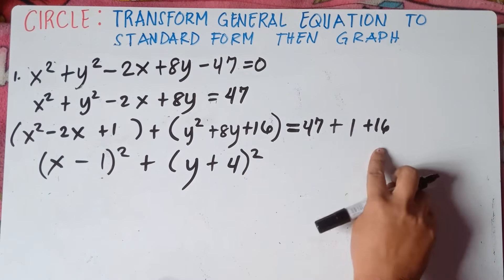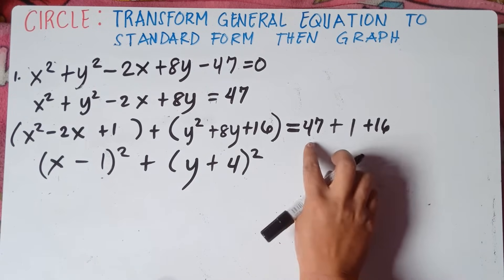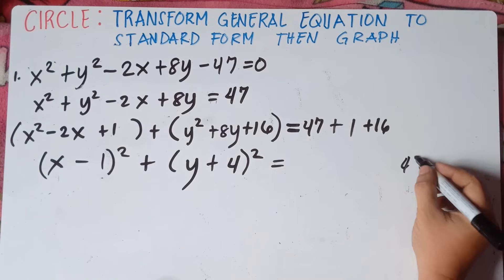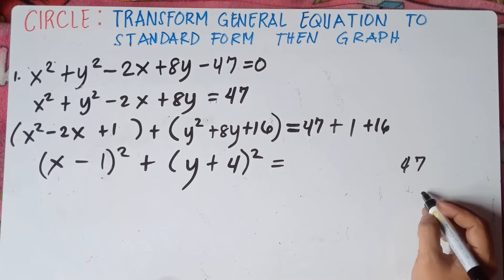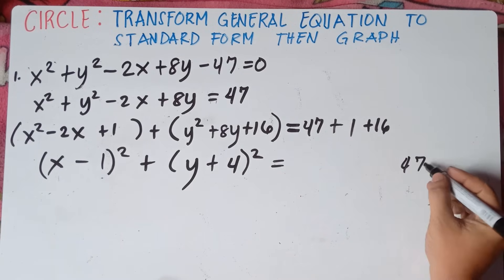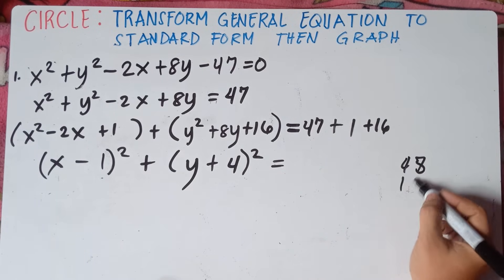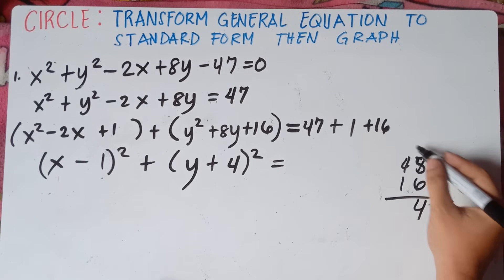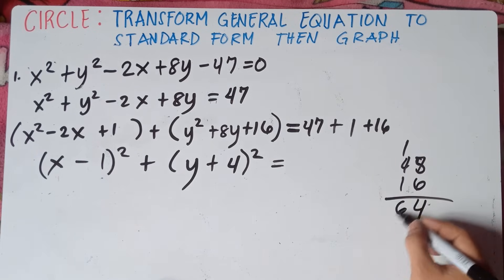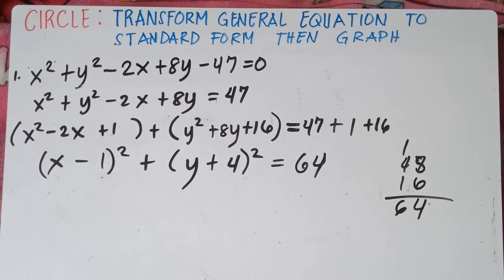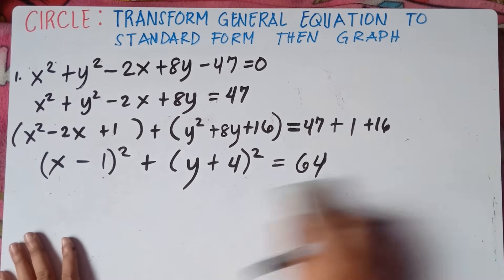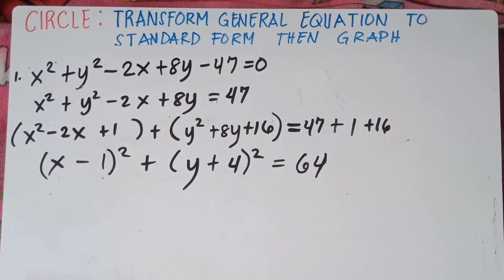Then on the right side: 47 plus 1 is 48, plus 16 equals 64. So the right side is 64. That is your equation and this is your answer.